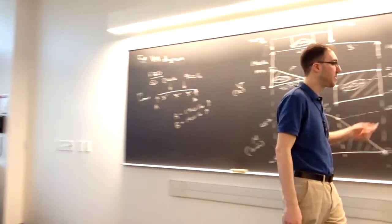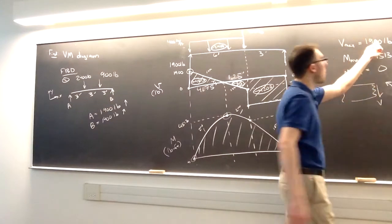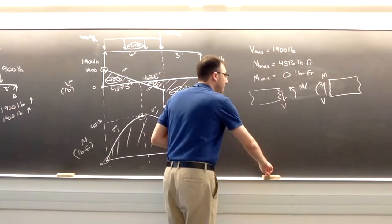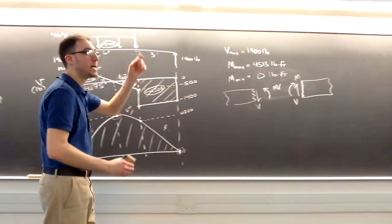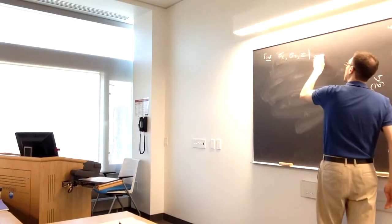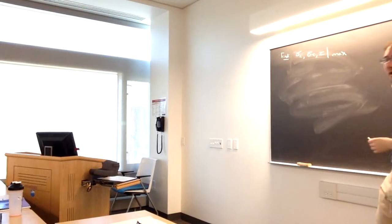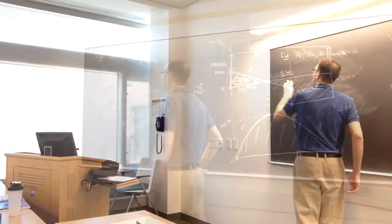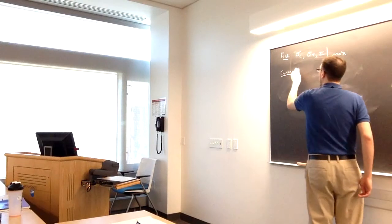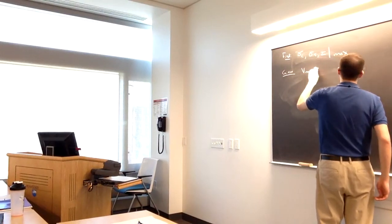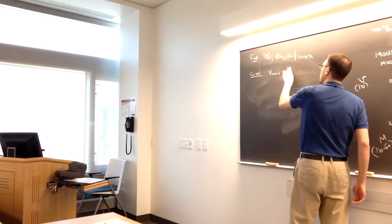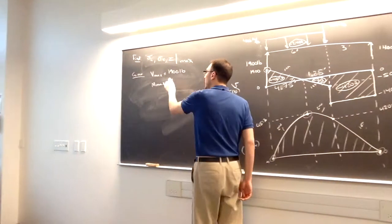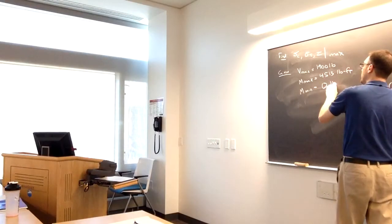To do that, we already have the VM diagram made. The values we need to carry into this next part are: our maximum V was 1,900 pounds, our maximum M value was 4,513 pound-feet, and our minimum was zero.